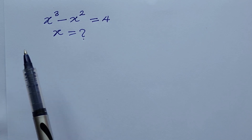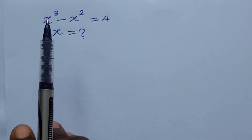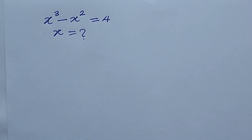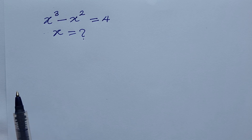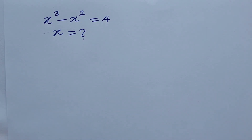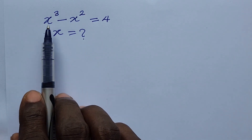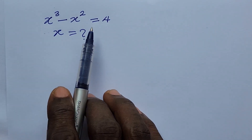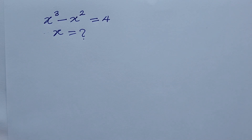Welcome to MathsPro. The question before us is: x to the power of 3 minus x to the power of 2 equals 4. What will x be equal to? It's a very simple challenge — by trial and error method you can get x to be equal to 2. But we all know that the power of an exponent shows the number of solutions to the equation, so from this equation we discover that we're going to have three solutions.